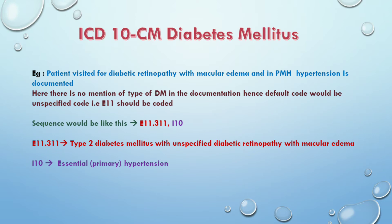The default code is E11. Type 2 diabetes mellitus code is E11 in the series — specifically E11.3 with retinopathy. If the type of diabetes is not mentioned in the documentation, the default is type 2 diabetes. There is also hypertension in the patient's past medical history, so I10, essential primary hypertension, is a secondary diagnosis.